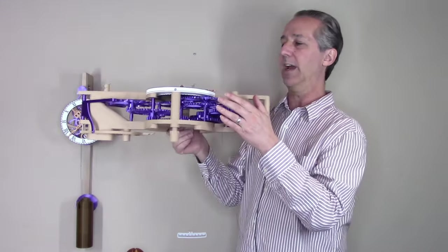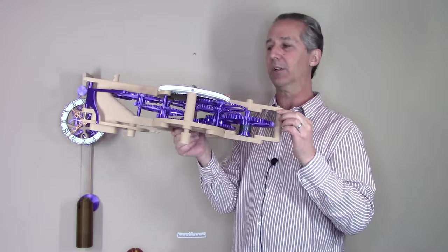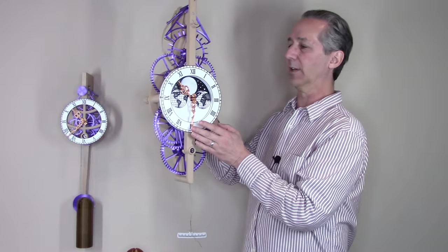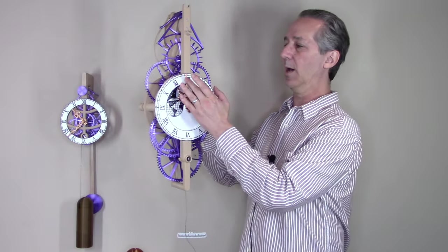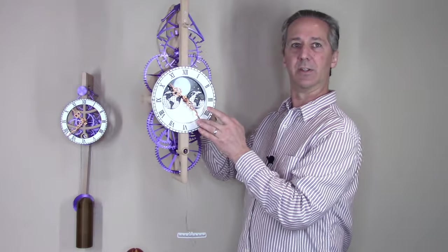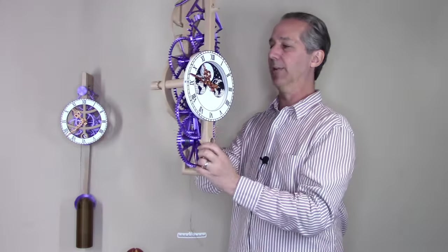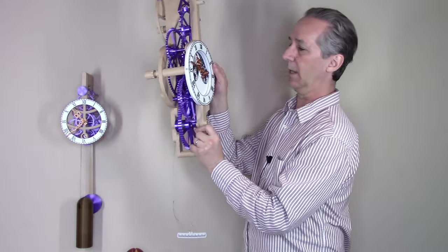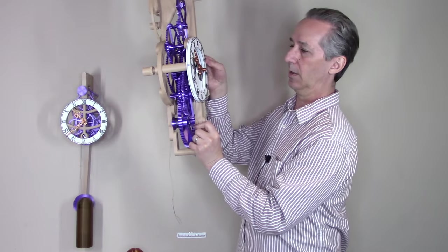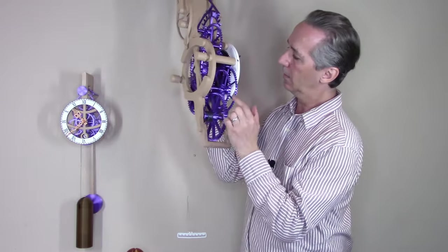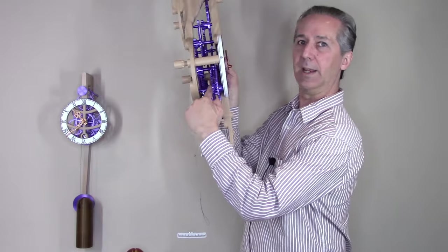The last tricky challenge was how to add a friction clutch. Now there's two friction clutches in this clock. One allows you to change the time and then there's a second friction clutch, which is right here.